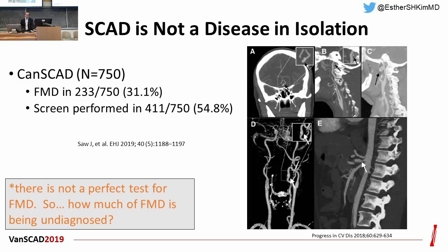Based on these histopathologic features, coronary dissection may happen, resulting in SCAD as one of the clinical manifestations. In the Canadian SCAD registry, 31% of patients presenting with SCAD have FMD as an underlying disease. Importantly, FMD screening was only performed for 50% of patients, suggesting that FMD may be underdiagnosed in patients with SCAD.